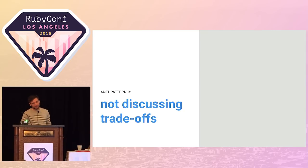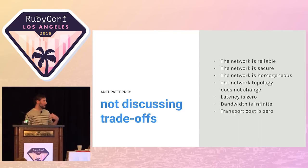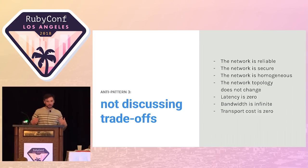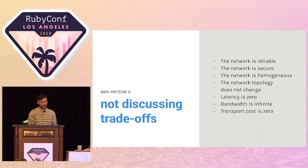Be aware of the trade-offs — operationally, monetarily. Talk through the costs and benefits of your decisions. And because we're not perfect, it's easy to make assumptions about the network. These aren't just operations or systems problems — these are things we need to be conscious about when we're writing our code. When you're writing code, it's there in your face. But these things are actively abstracted away from your attention, and they have real consequences.